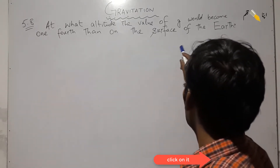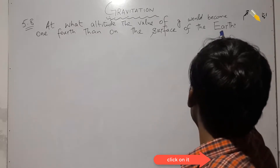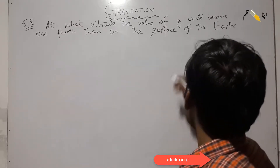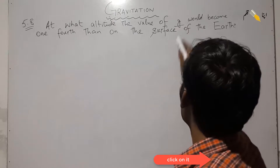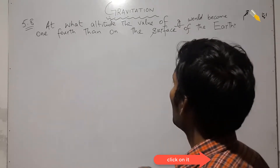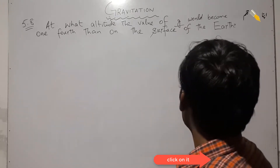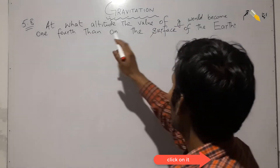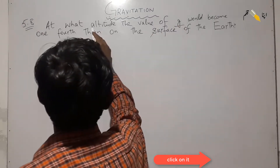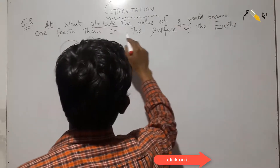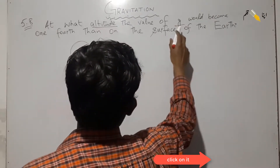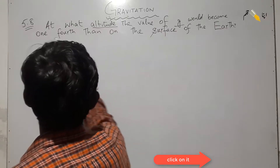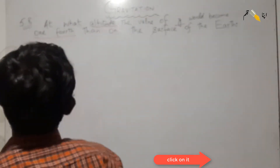On the surface of the earth, the value of g is a certain value. At what altitude above the earth's surface would the value of g become one-fourth? So if we have one-fourth value of g at that height.